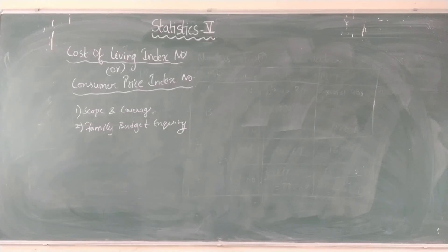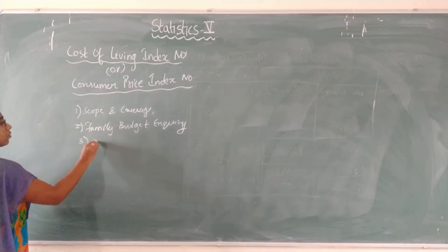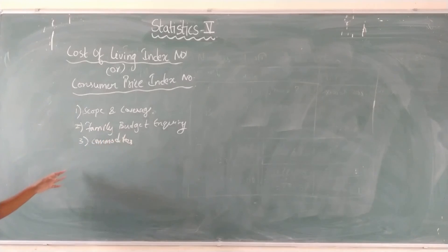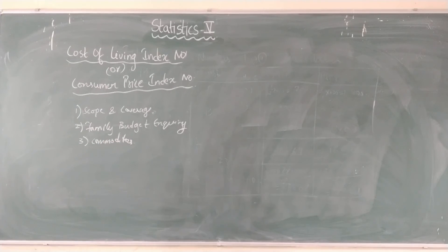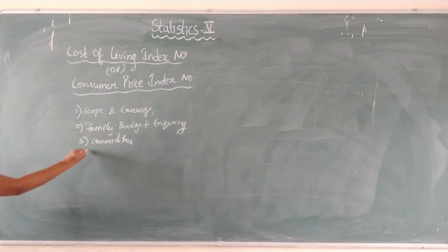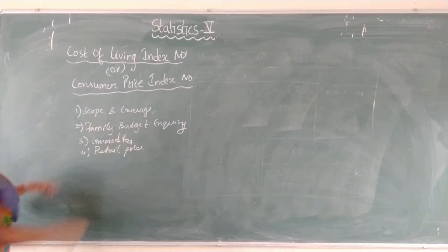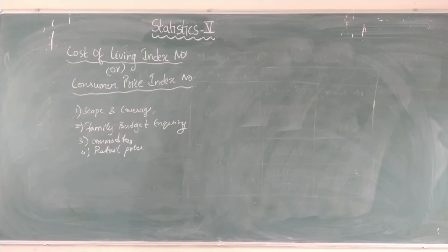The third step is selection of commodities — what are the different commodities used by those classes. The fourth step is collection of retail prices of those commodities. After having information from these four steps, we calculate the cost of living index numbers.